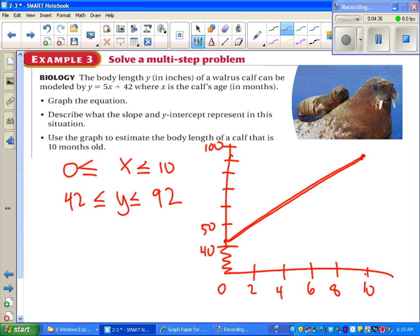It says use the graph to estimate the body length. Except I already kind of know what it is when we plug in the ten. But we can also verify that on the graph by seeing that we get a little bit bigger than 90. I could estimate the walrus' length at any other number between zero and ten with this graph too. If I went to six, it looks like I'm somewhere between 60 and 70. And if I were to plug in six, I would get exactly 72. So the graph is good for helping estimate values.